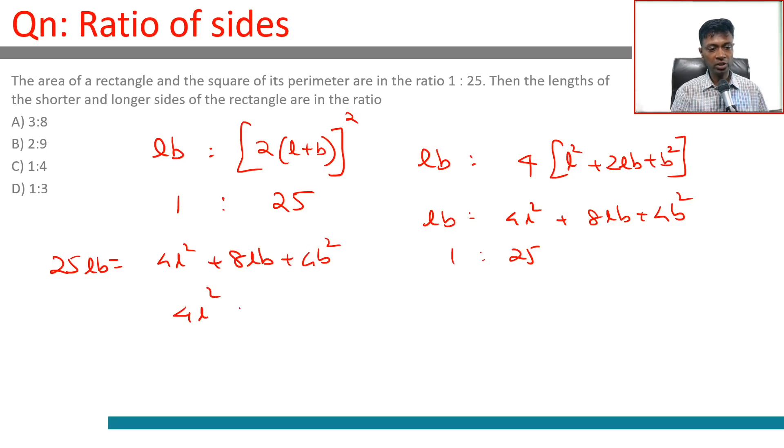4L square minus 17LB plus 4B square equals 0. When we split as 16 and 1, their coefficients are in the ratio 1 is to 4. So 4L square minus 16LB minus LB plus 4B square is 0.